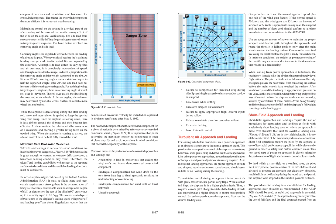Additional crosswind landing errors include: failure to compensate for increased drag during side-slip resulting in excessive sink rate and/or too low airspeed; touchdown while drifting; excessive airspeed on touchdown; failure to apply appropriate flight control inputs during rollout; failure to maintain directional control on rollout; excessive braking; and loss of aircraft control.